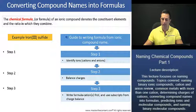The guide to writing formula from ionic compound name. Step one, we identify the ions, that's cations and anions. Step two, we're going to balance the charges. And in step three, we write the formula, cations first, and use subscripts from charge balance. Let's go ahead and do an example.